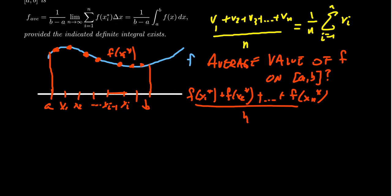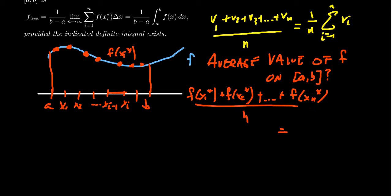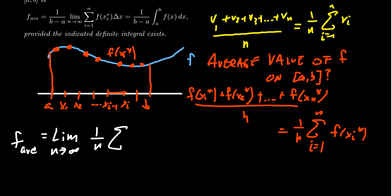And like we saw above, this would look like 1 over n times the sum of f of xi star, as i ranges from 1 to n. And so this would give us the value. We could then take our average value, which is often denoted f sub ave, the average value, and then we can take the limit as n goes to infinity of 1 over n times the sum, as i goes from 1 to n, of f of xi star.